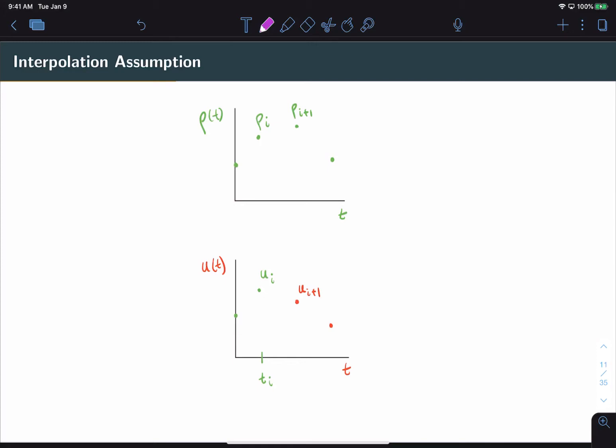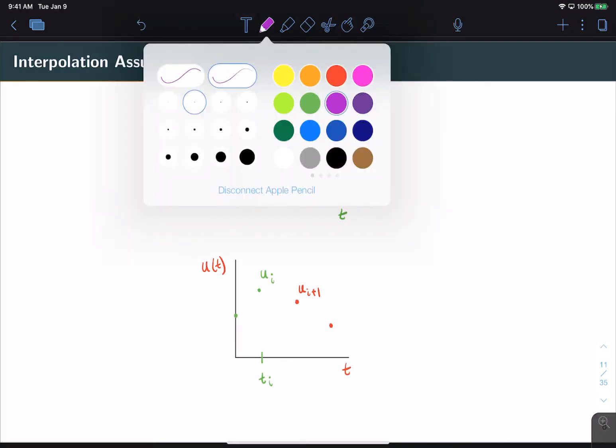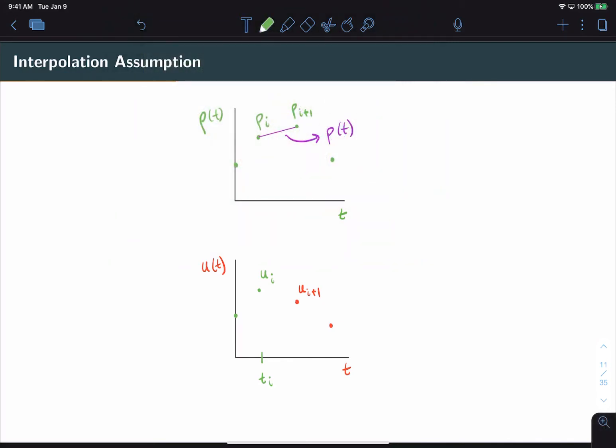The fundamental assumption that the interpolation method makes is that the force in between these two time instances is linear. Hence we interpolate between the two known values of the force. This means that we can actually obtain an analytical function p(t) for the force between those two points, which turns the problem back into an analytical problem. We can solve for the response using ui as initial conditions and solve for a time interval Δt.